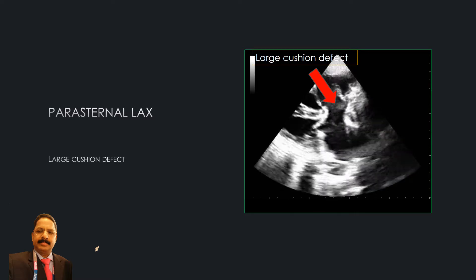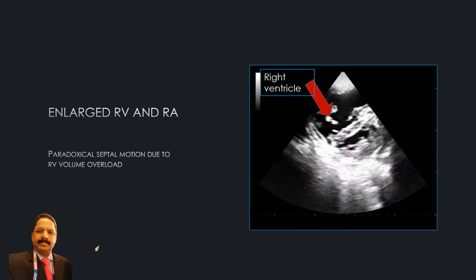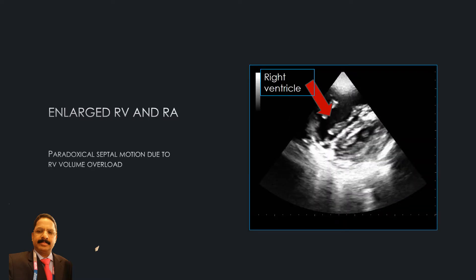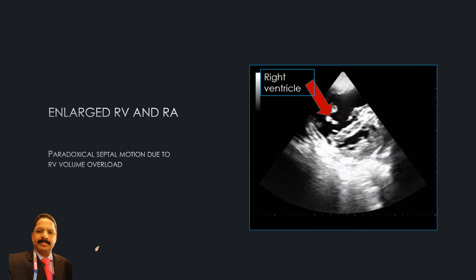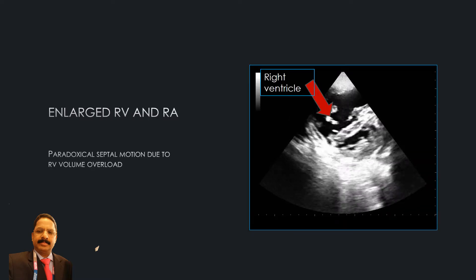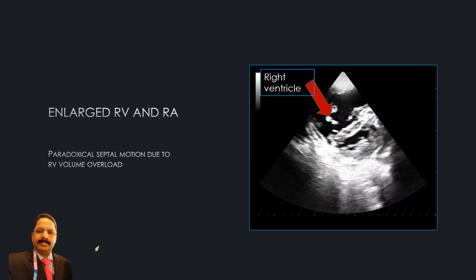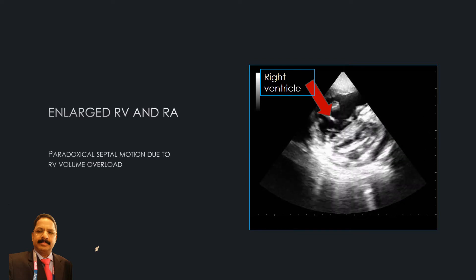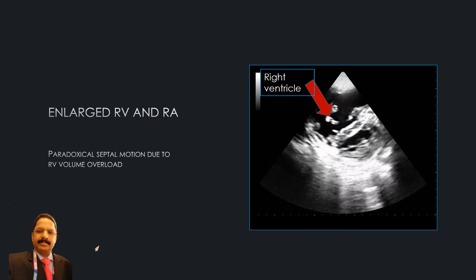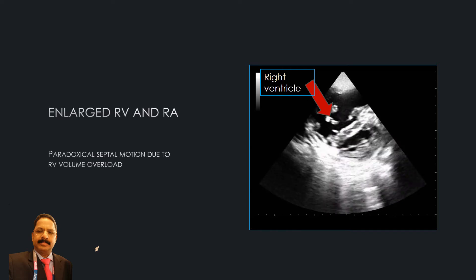This is the short axis parasternal view. You can see a large right ventricle due to volume overload and severe pulmonary artery hypertension. Here you can also see the paradoxical septal motion of the left ventricle.